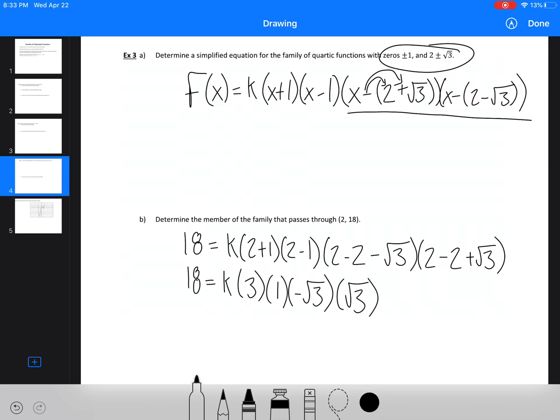Now root 3 times root 3 is root 9, which is just equal to 3. So this is going to be 18 times 3 times, so I'll write out two steps here. 3 times 1 is 3, so we get 3k times, and then those roots are going to become negative 3, which is 18 equals negative 9k, k equals negative 2.